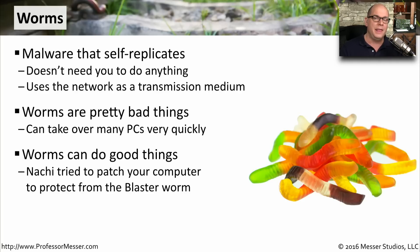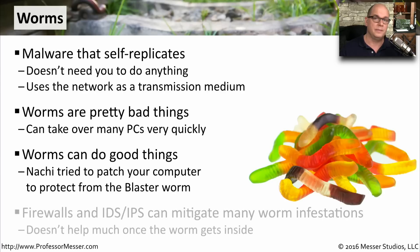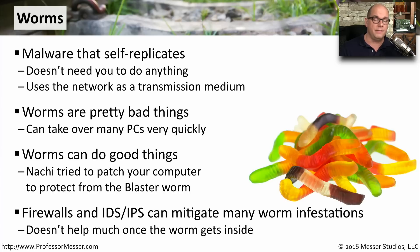NACHI was a good example of this — it went from system to system automatically without your permission and tried to fix problems with the operating system that made it susceptible to a worm called the Blaster worm. Although this probably isn't the best way to deal with these types of worm infestations, it certainly speaks to the power that worms have to automatically replicate themselves across the network. In many organizations, it's not unusual to have a firewall or an intrusion prevention system at the edge of the network that watches for some of these well-known worms to come through, and if it identifies that worm in the network traffic, it can drop it before it ever gets on the inside of your network.